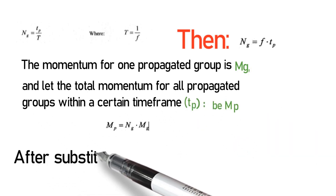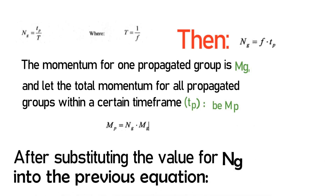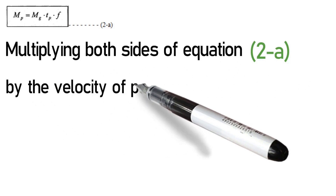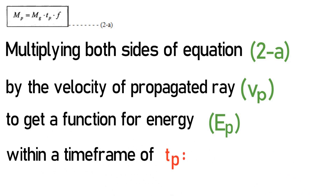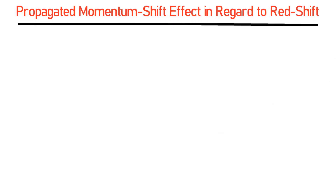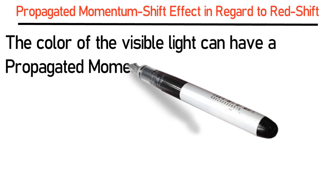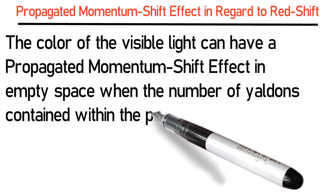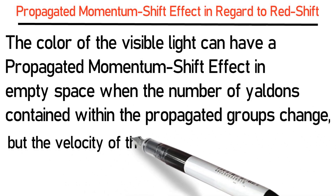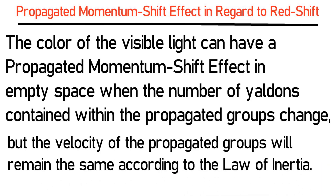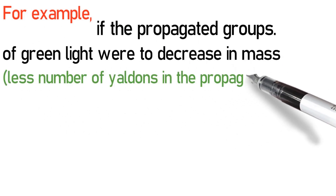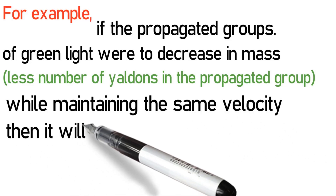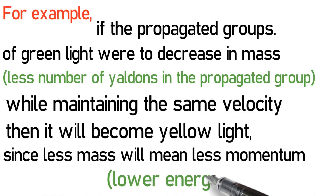After substituting the value for Ng into the previous equation and multiplying both sides of equation 2a by the velocity of the propagated ray, Vp, to get a function for energy, Ep, within a time frame of Tp. Propagated momentum shift effect in regard to red shift: the color of the visible light can have a propagated momentum shift effect in empty space when the number of Yaldins contained within the propagated groups changes, but the velocity of the propagated groups will remain the same according to the law of inertia. For example, if the propagated groups of green light were to decrease in mass — fewer Yaldins in the propagated group — while maintaining the same velocity, then it will become yellow light since less mass means less momentum and lower energy.